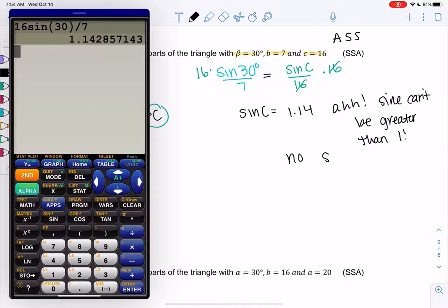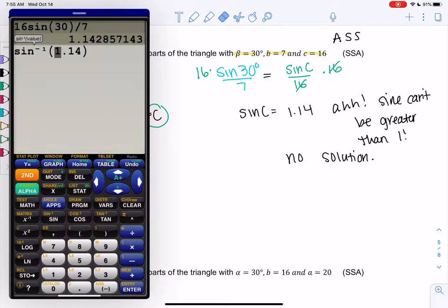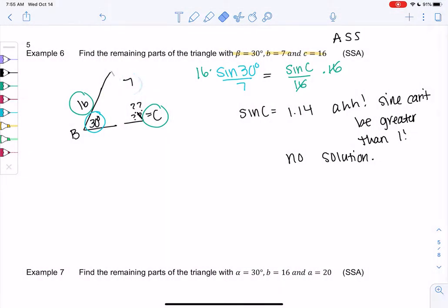So this has no solution. So I recommend remembering this rule. It saves you some time. But if you didn't, you would do sine inverse of 1.14, and it's going to yell at you because it's not possible. So this is the case where it's giving us an error message because the side never reaches the bottom. So there is no triangle with these conditions.